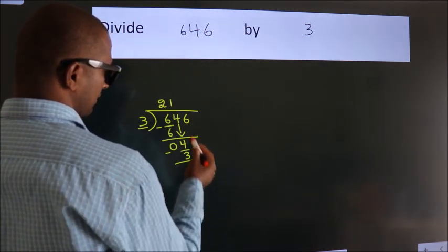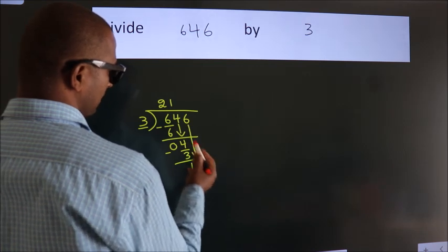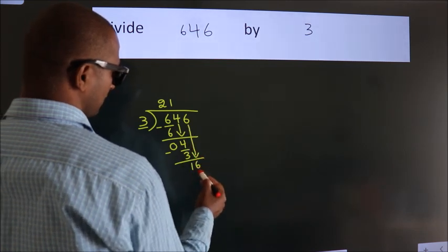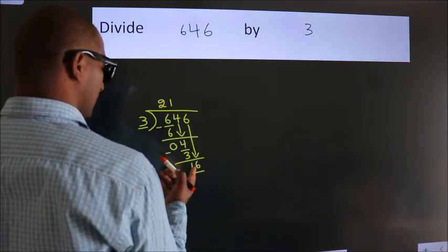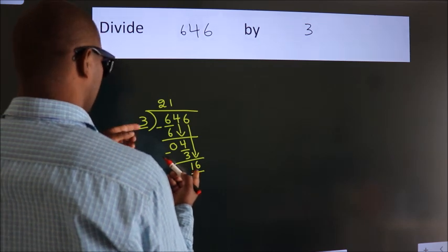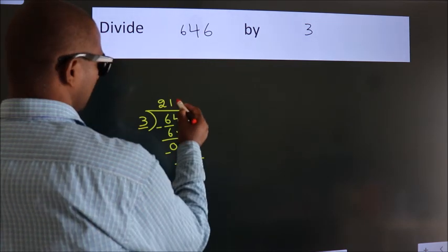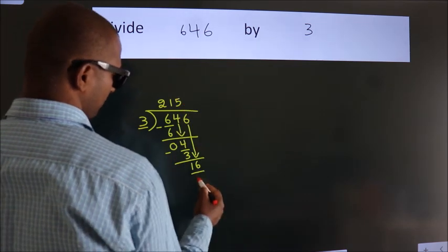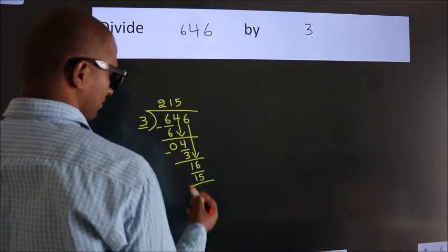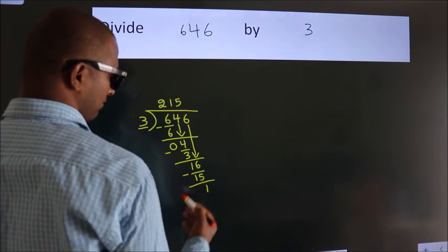After this, bring down the beside number. So 6 down. So 16. A number close to 16 in 3 table is 3 5s, 15. Now we subtract. We get 1.